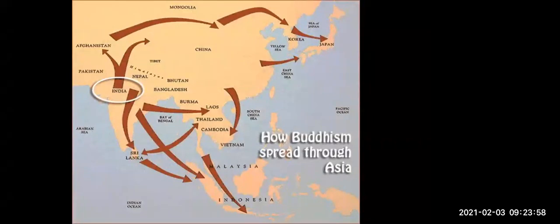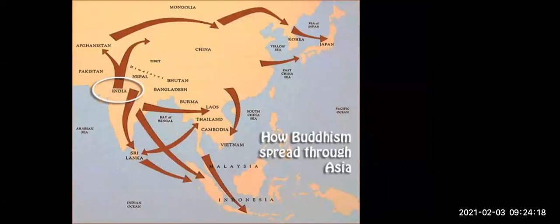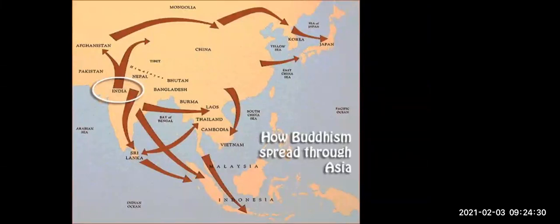In this picture everyone can see how Buddhism spread through Asia. The circled area shows India, and the arrows show the spread of Buddhism from India to other countries — from India to Afghanistan, from India to Korea and Japan, and from India to Sri Lanka and then Indonesia. The arrows show the spread of Buddhism from India to other countries of Asia.